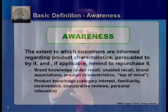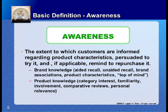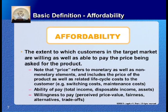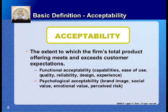So what we have done so far is define each of the four A's, each into two dimensions: awareness into brand knowledge and product knowledge; accessibility into availability and convenience; affordability into ability to pay and willingness to pay; and acceptability into functional acceptability and psychological or social acceptability.